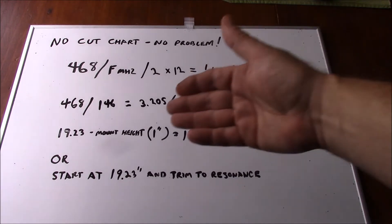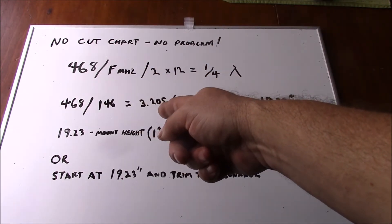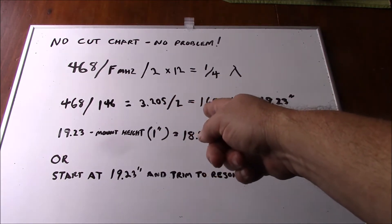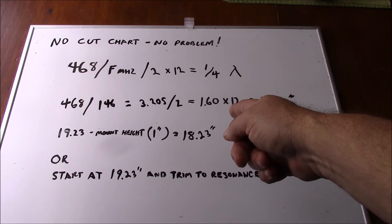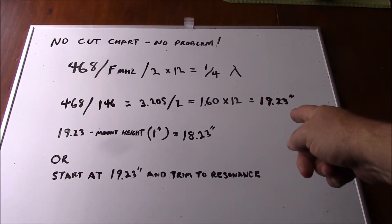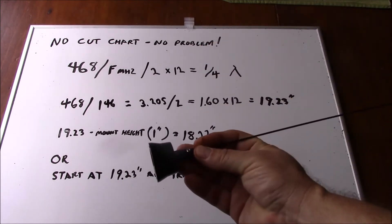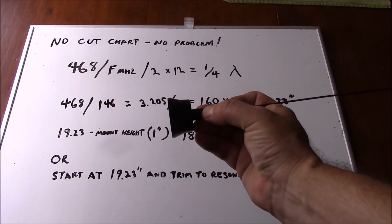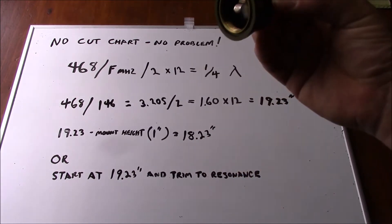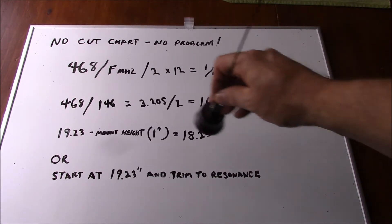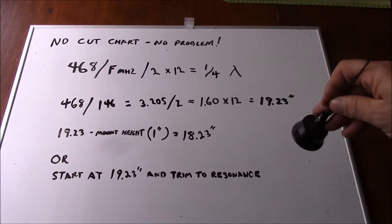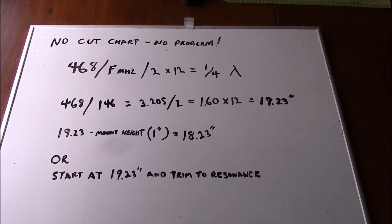So in our example here, 468 divided by 146 megahertz equals 3.205 feet. Divide that by 2 and it equals 1.60 feet. Multiply that times 12 to get the result in inches and we come up with 19.23 inches. Now in our particular example here, our mount height is about an inch and that's between where the resonator rests and the conductive surface of the antenna. So if we subtract that, we come up with about 18.23 inches. Or to be safe, what you would do is you would start the resonator length at 19.23 inches and then you would trim it a quarter inch at a time until you reached resonance.